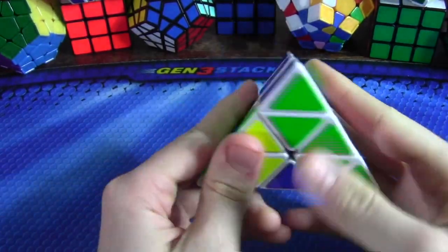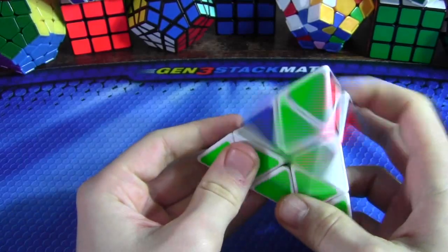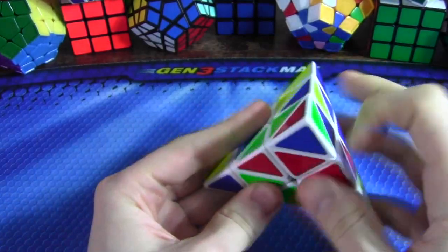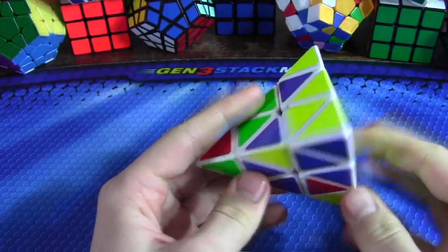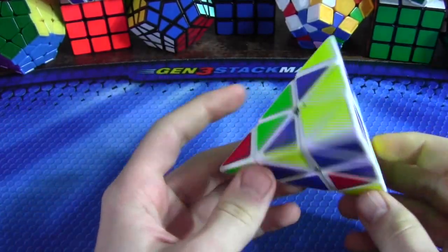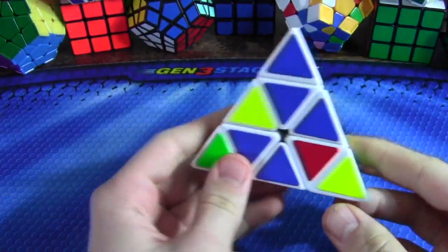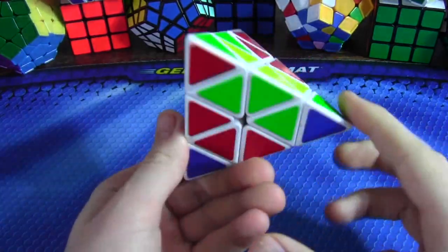This next solve was the fastest of the bunch, and it was a 1.59. As you can see, it's a pretty easy scramble. So there are three tips, but that's not a big deal because they work into the solve pretty nicely.